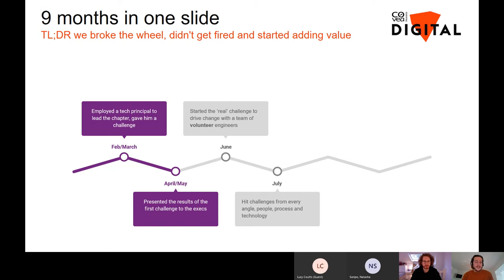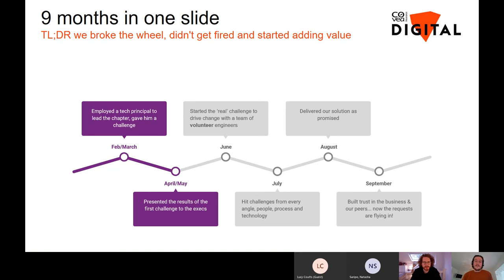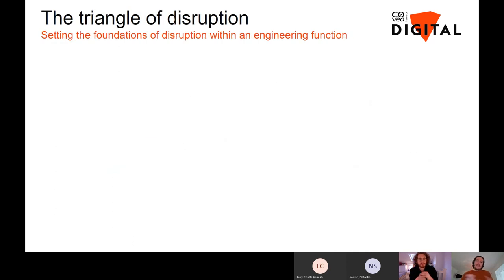In July and August we hit so many challenges — from the technology we were using to the processes in the business. It was a really tough period for the chapter. But once we got through that barrier, we delivered our solution as promised. We've now built trust in the business from exec level down, and requests for our disruptive activity are flying in. Before going into delivery details, Josh will reiterate the foundations of disruption from an engineering perspective.